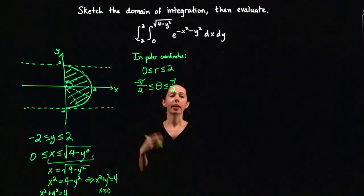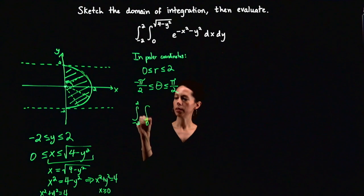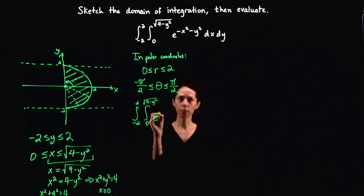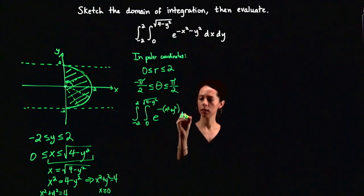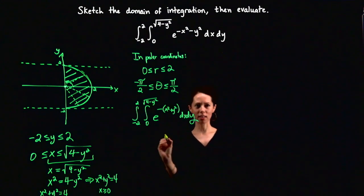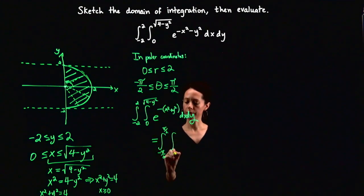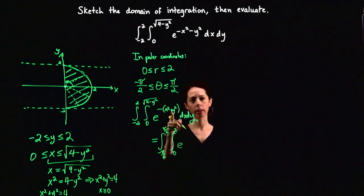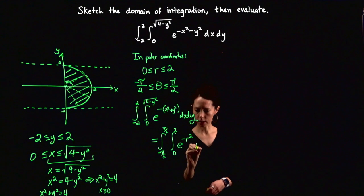These polar bounds are constant, which is better than the original bounds. Converting the starting integral to polar coordinates: the integral from negative 2 to 2 and from 0 to the square root of 4 minus y squared of e to the negative quantity x squared plus y squared dx dy becomes the integral for theta from negative pi over 2 to pi over 2, and r from 0 to 2, of e to the negative r squared times r dr d theta, since x squared plus y squared equals r squared and we pick up the Jacobian factor r.